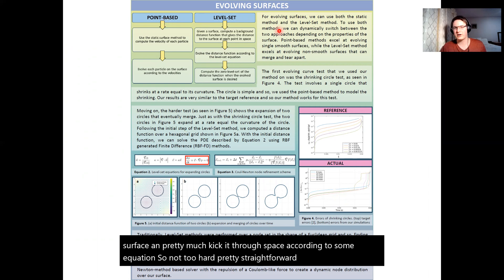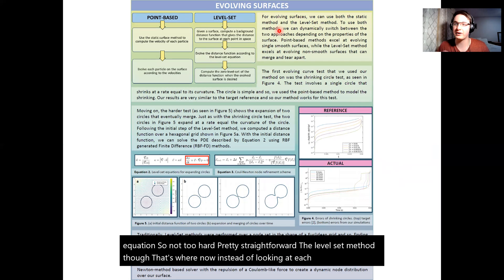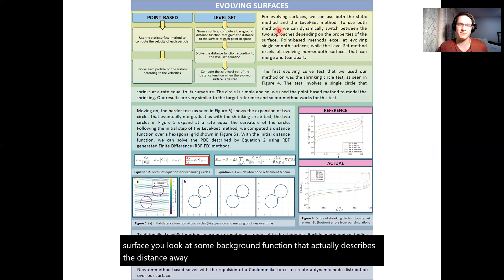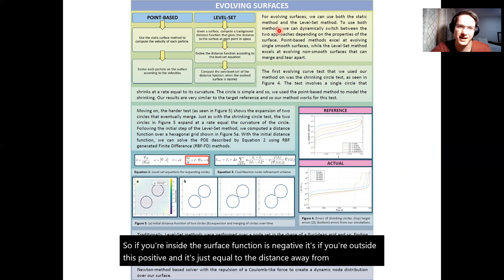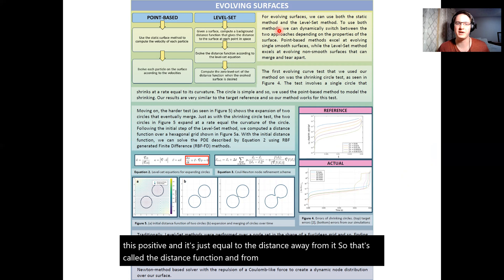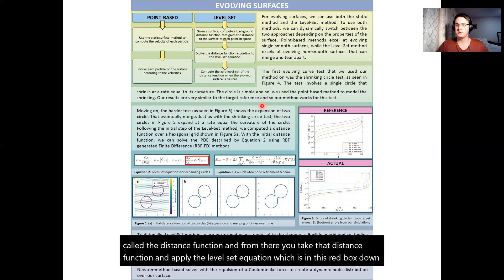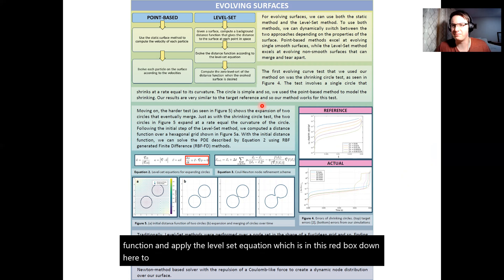The level set method though, that's where now instead of looking at each point on the surface you look at some background function that actually describes the distance away from the surface you are. So if you're inside the surface the function is negative, if you're outside it's positive and it's just equal to the distance away from it. So that's called the distance function and from there you take that distance function and apply the level set equation which is in this red box down here to evolve that in time. And you just use standard PDE techniques. In this case we use radial basis generated finite difference because it has a lot of really nice benefits and conversion properties.